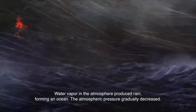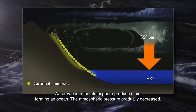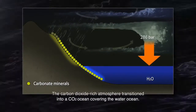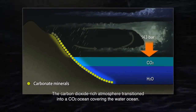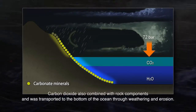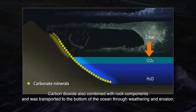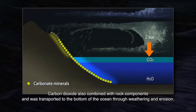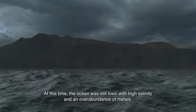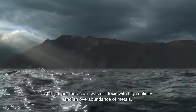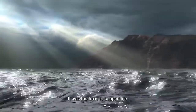Water vapor in the atmosphere produced rain, forming an ocean. The atmospheric pressure gradually decreased. The carbon dioxide-rich atmosphere transitioned into a CO2 ocean covering the water ocean. Carbon dioxide also combined with rock components and was transported to the bottom of the ocean through weathering and erosion. At this time, the ocean was still toxic with a high salinity and an overabundance of metals — too toxic to support life.